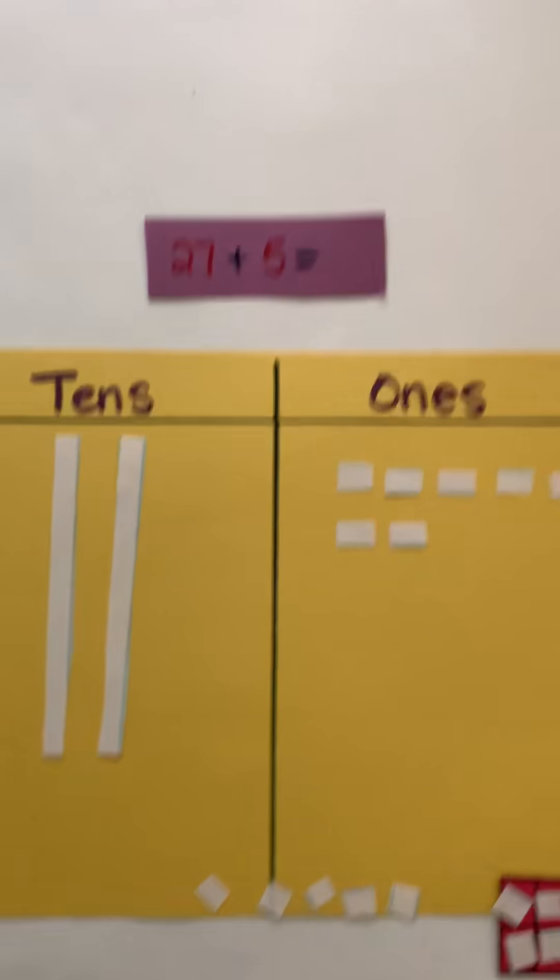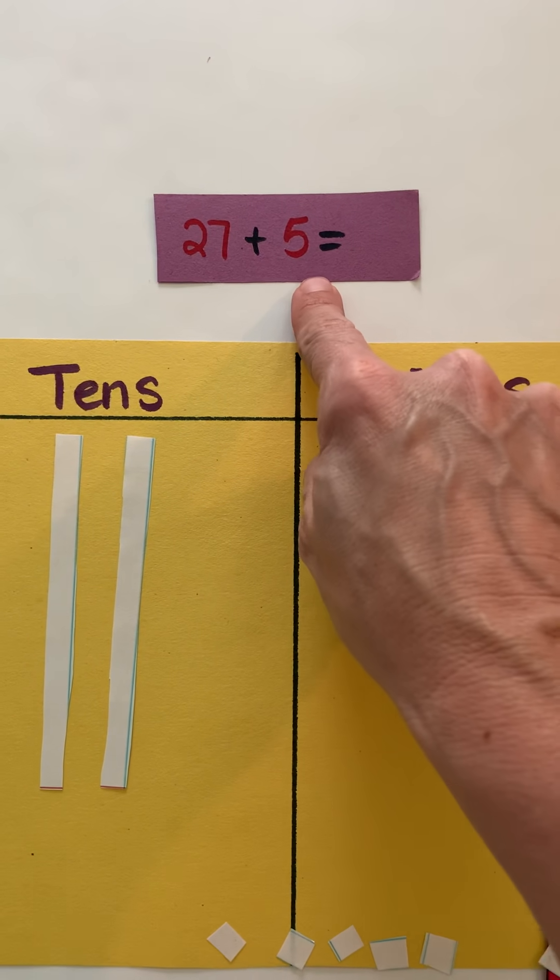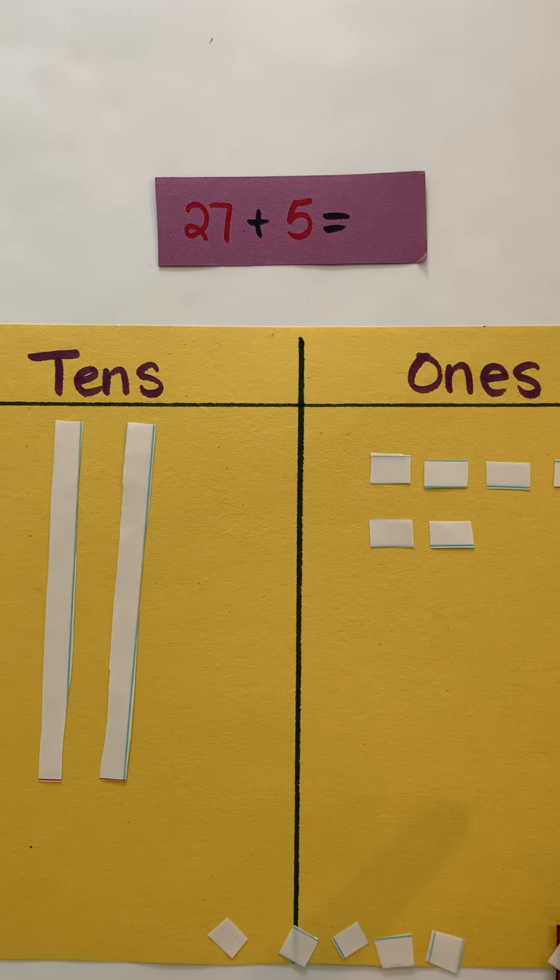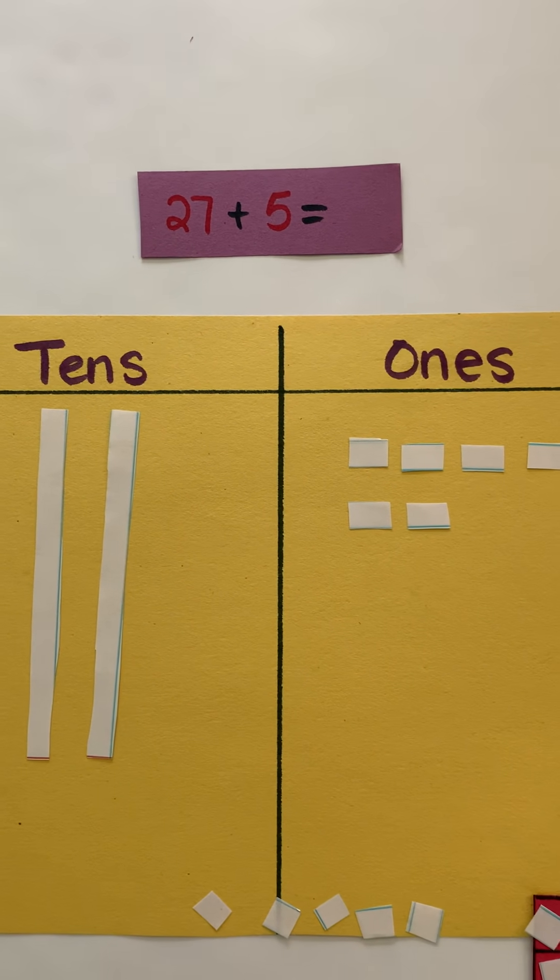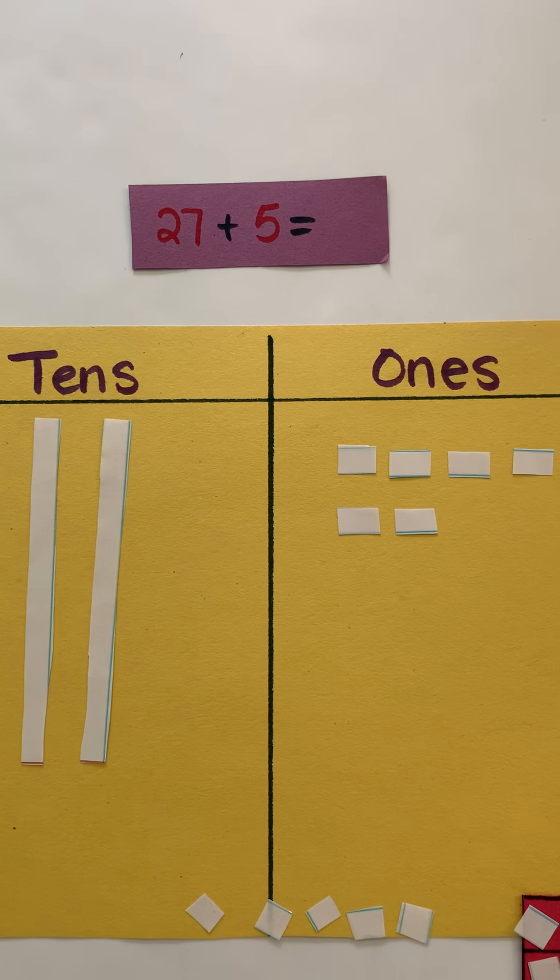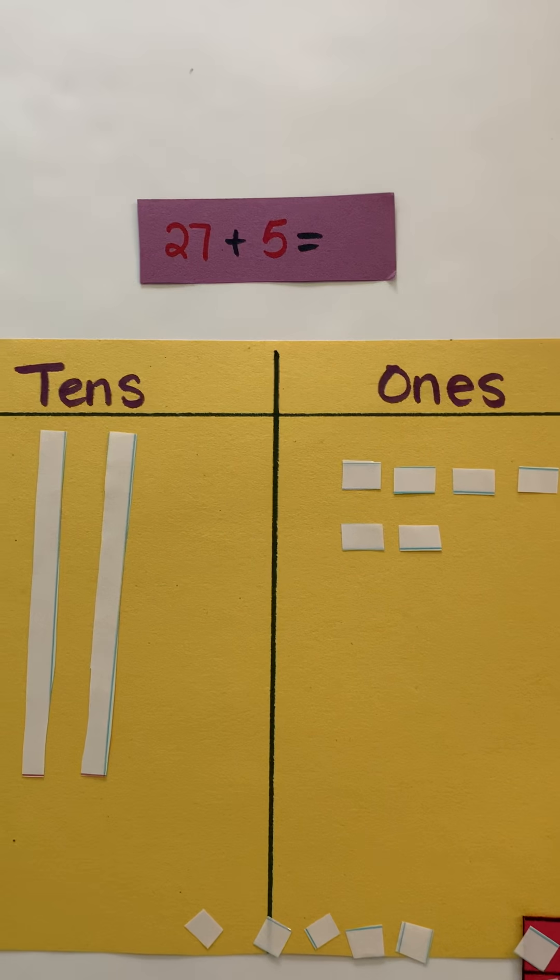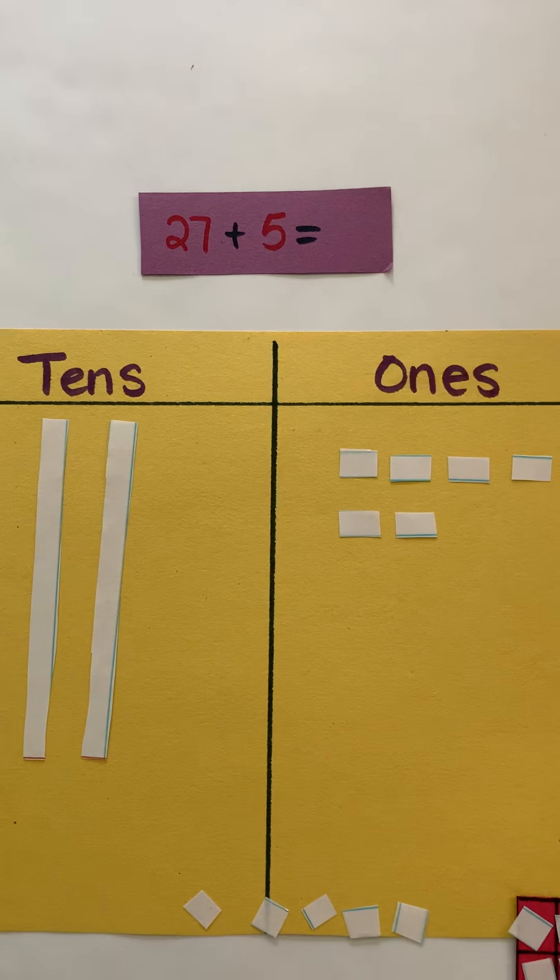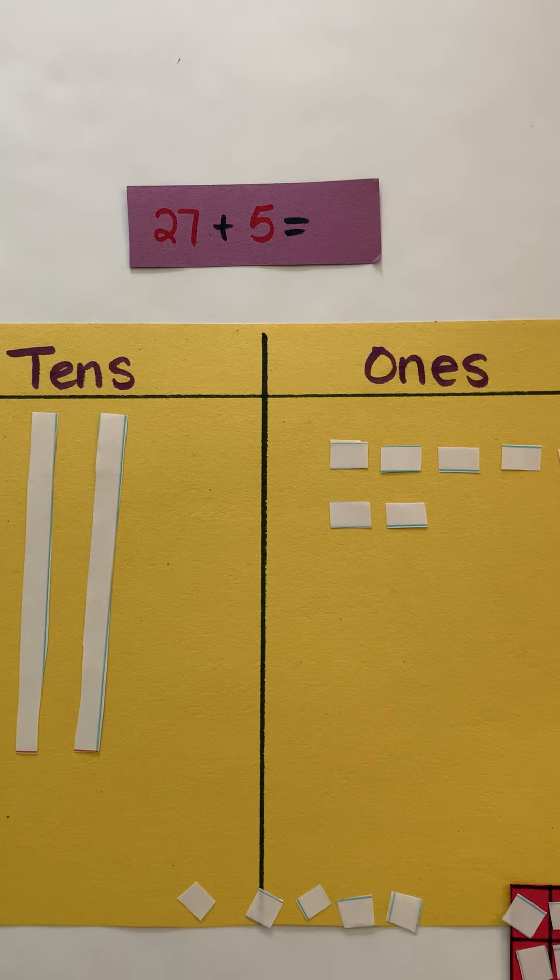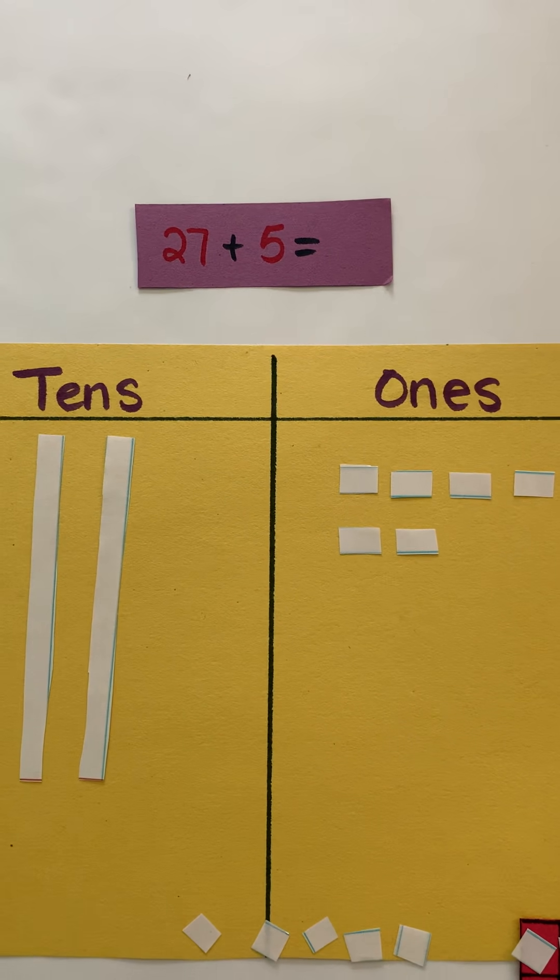This video will focus on adding a two-digit addend plus a one-digit addend using base 10 blocks when you're having to regroup. There is a video earlier where you had a two-digit addend plus a one-digit addend but you didn't end up having to make a group of 10, so you didn't have to regroup. But here we're going to have to regroup because we're going to end up with 10 or more ones.